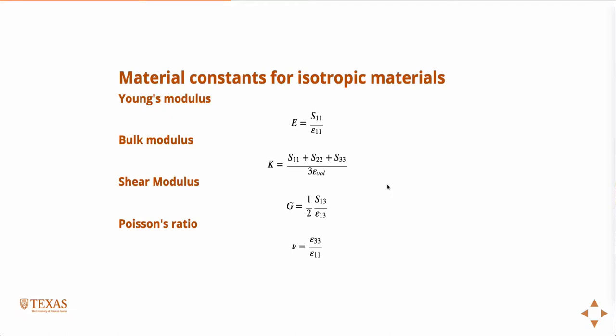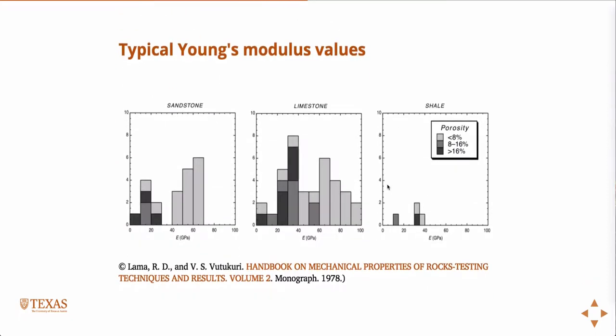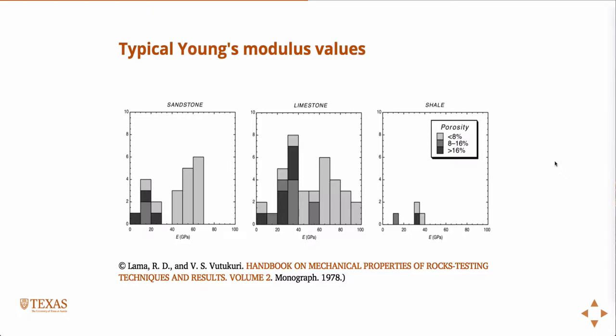So we ended up here last Friday, we were just talking about some definitions for the different material constants. If you look at some real values for Young's modulus for rocks — here's some different sandstones, limestones, and shales — you can see quite a variety. It's generally difficult to just look at a material and be able to say how stiff it is.